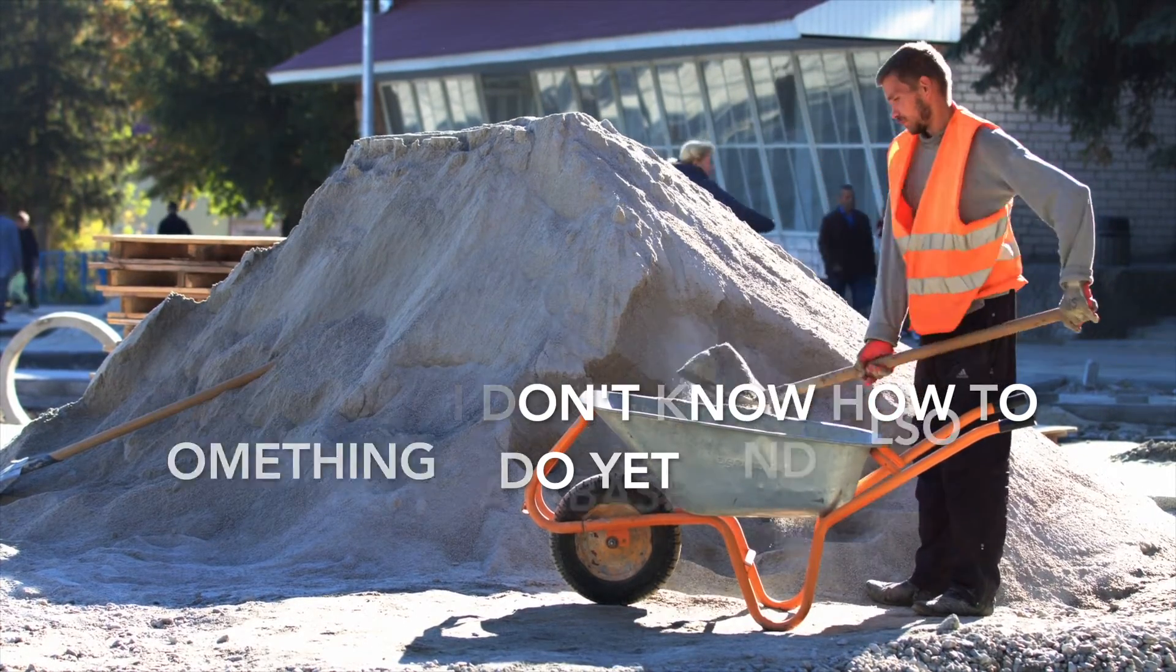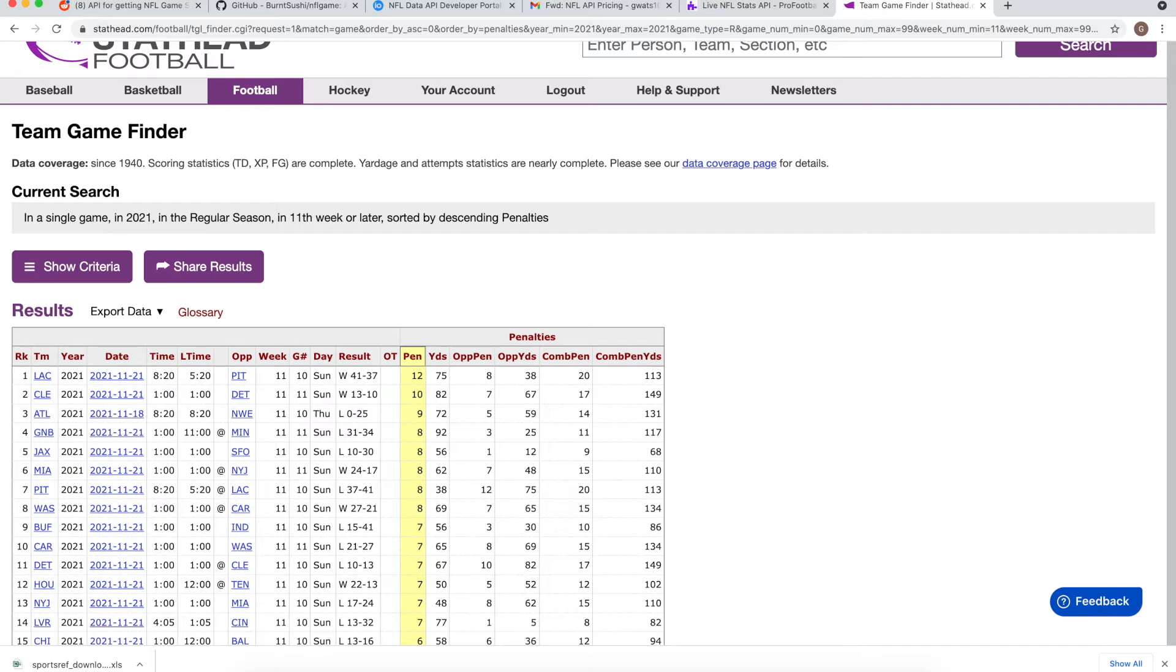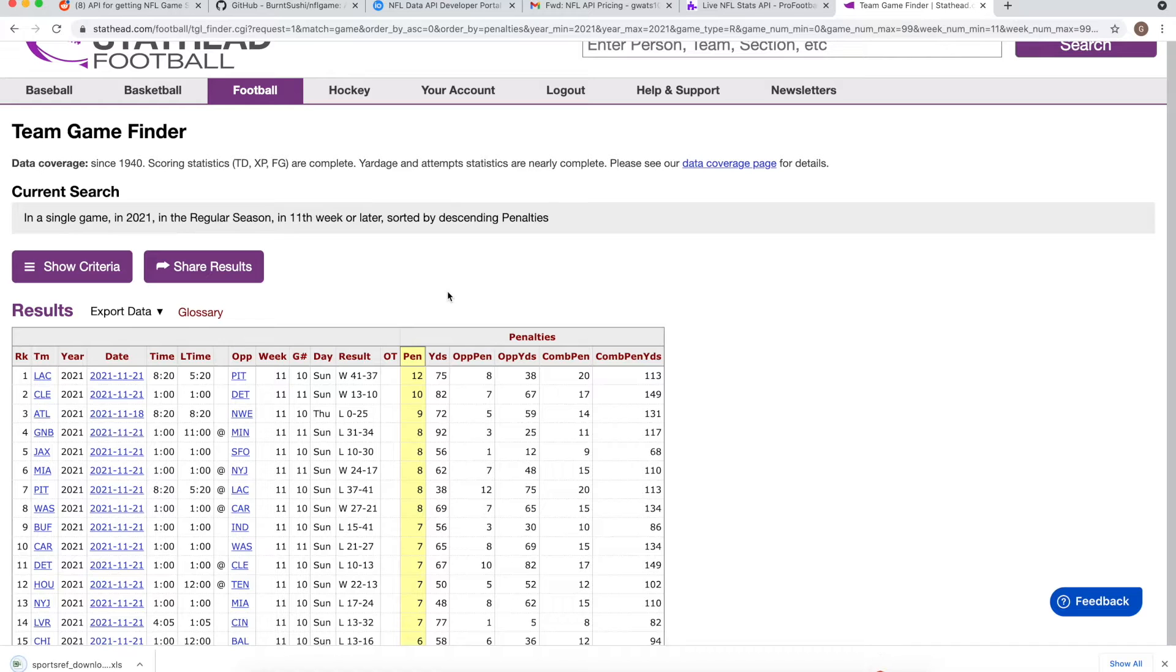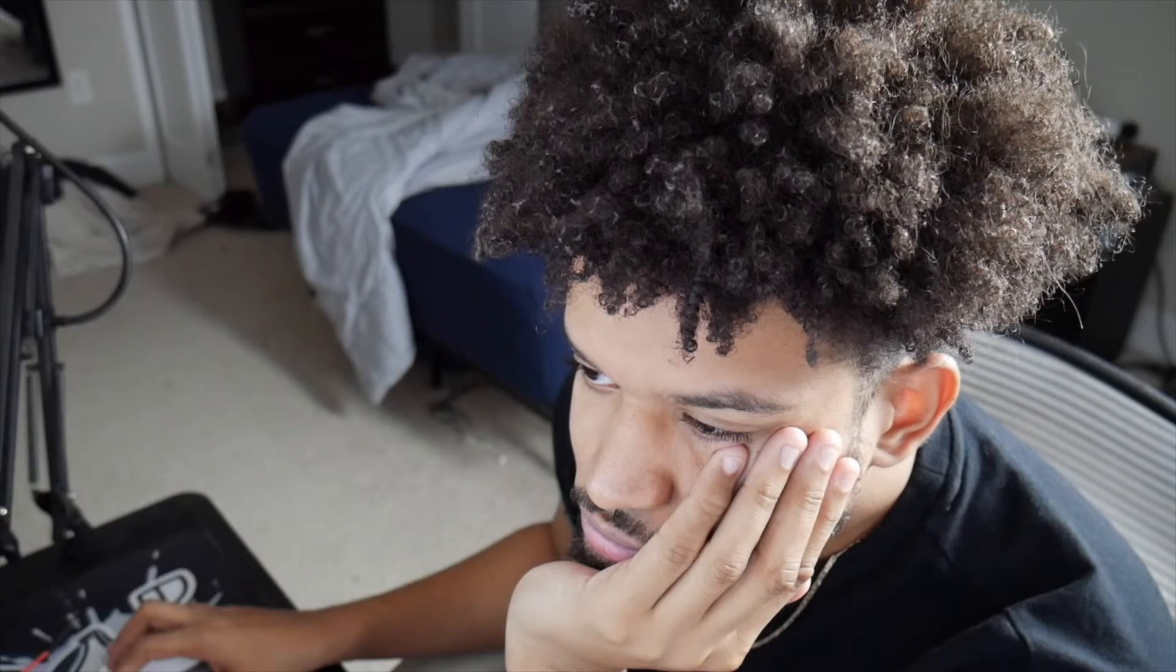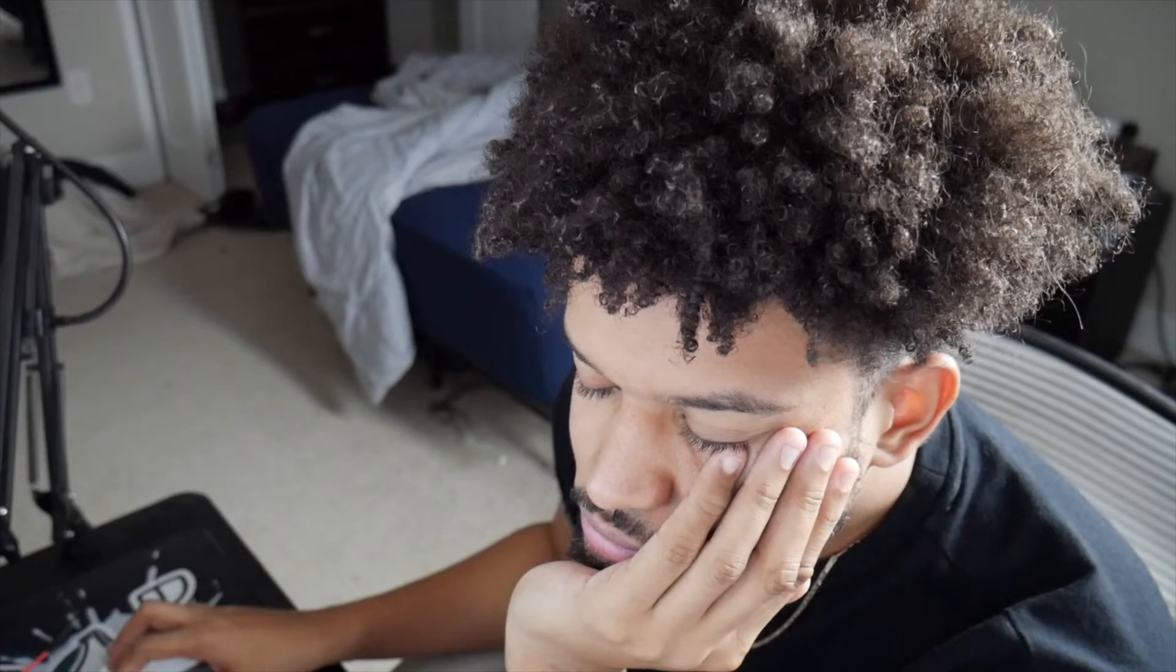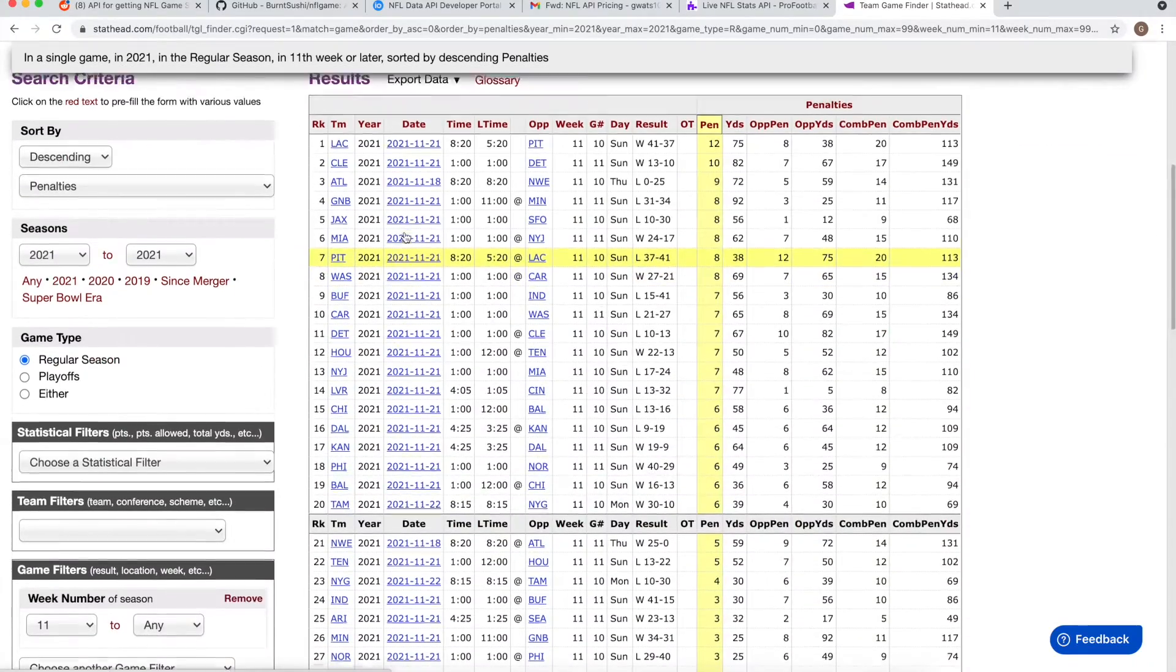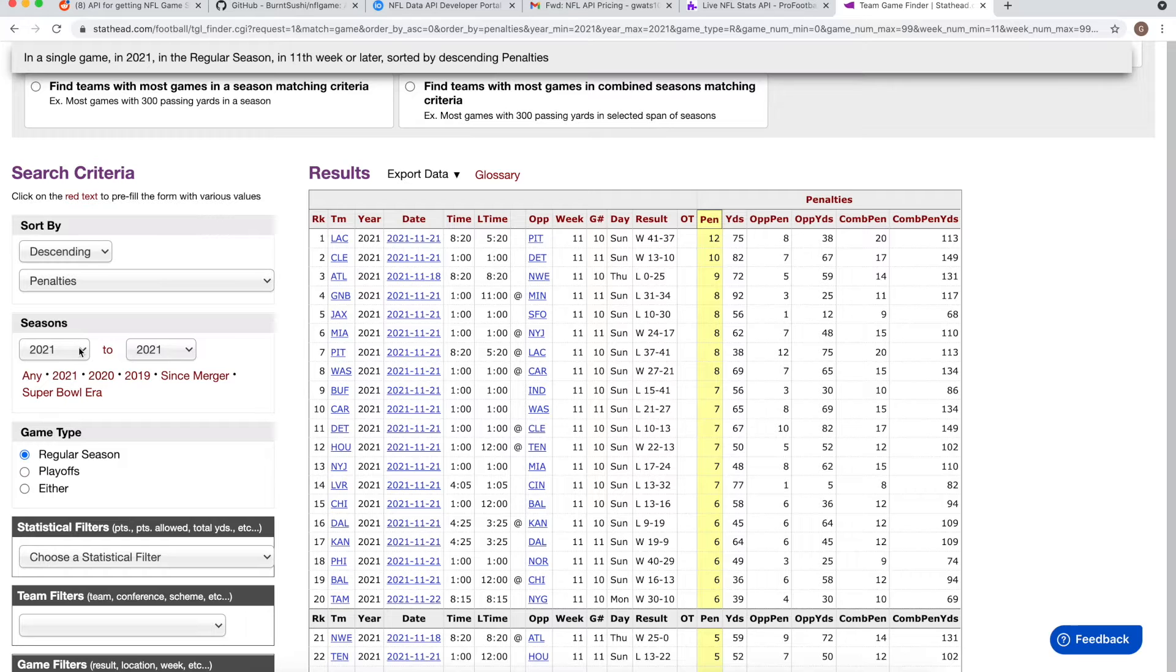So now that all else has failed, that leaves me with only one option, which is pulling it manually. Not gonna lie, this is tedious, it sucks, it's my least favorite thing to do, but it gets the job done. What I did was go on to stathead.com where I was able to get a cheap membership and download all the data I needed as XML files.